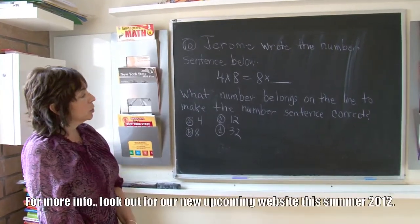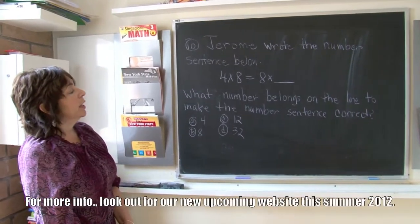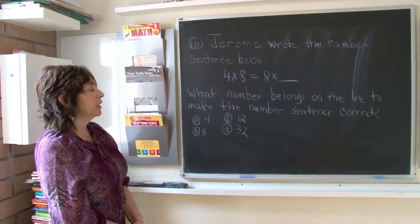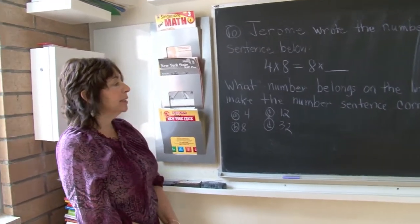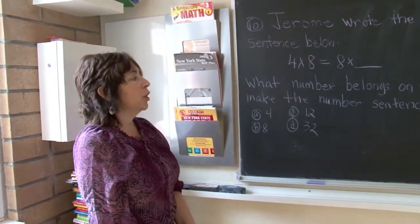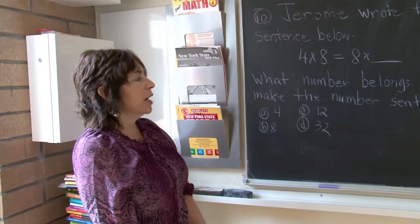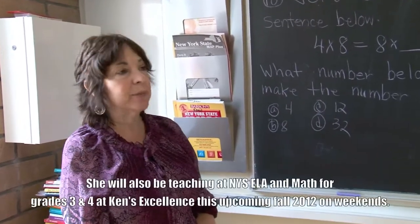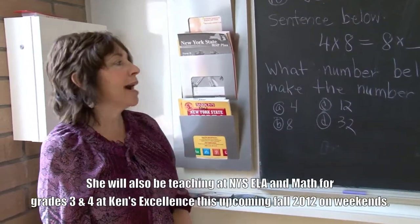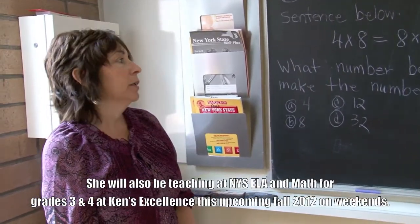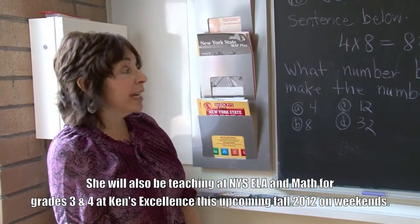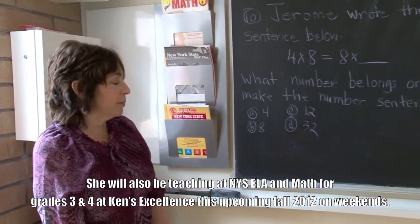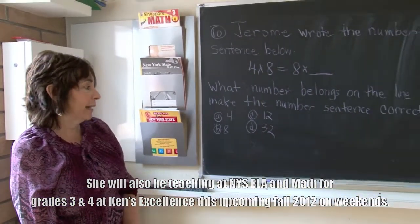This is called the commutative property of multiplication. What that means is the order of the numbers in a multiplication problem does not matter. So you need to have the same numbers, but the order you write them in does not matter.